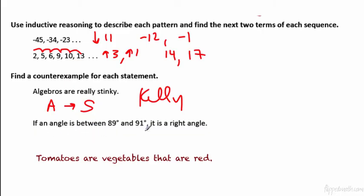If an angle's between 89 and 91, it's a right angle. Alright, so a counterexample, you have to be between 89 and 91, and then you're a right angle. Well, what if you are 89.5 degrees? That's not a right angle, but that's between 89 and 91. So that would be my counterexample there.